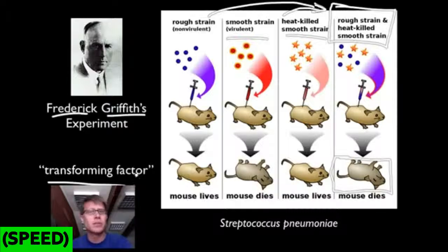And so what did he learn from that? Well, he learned a lot. And the big thing he learned is that there was a transforming factor. Something was being transferred from these dead smooth strains to these live rough strains. It was transforming them into a virulent type of bacteria. He didn't know what it was, but we took the next 30 years to figure out that it was DNA, and we figured out the structure of that.